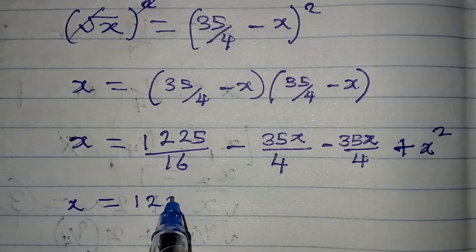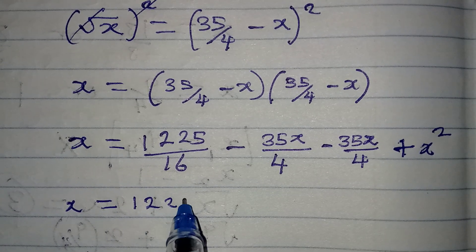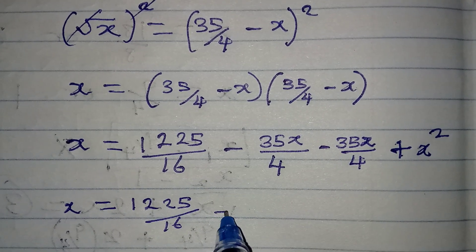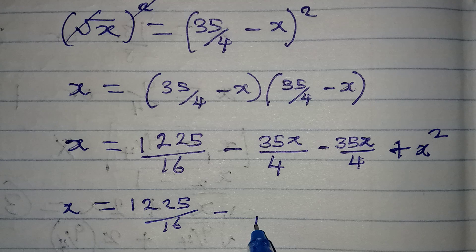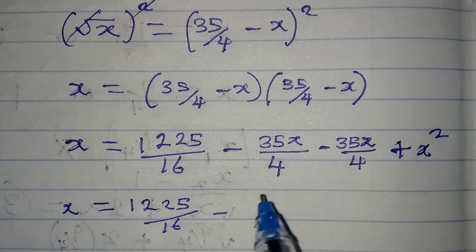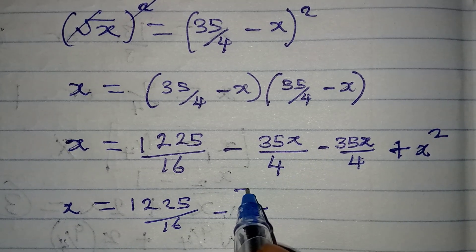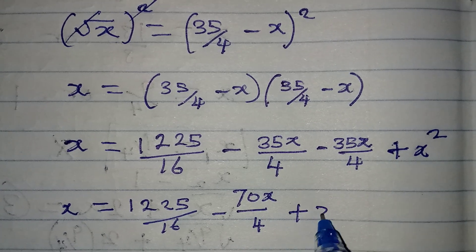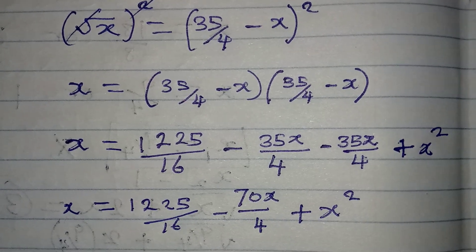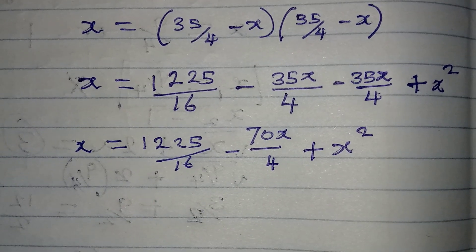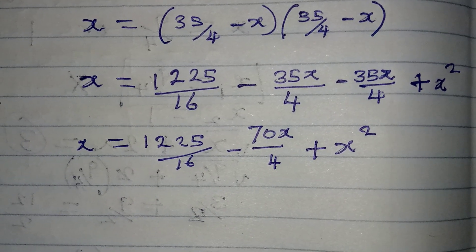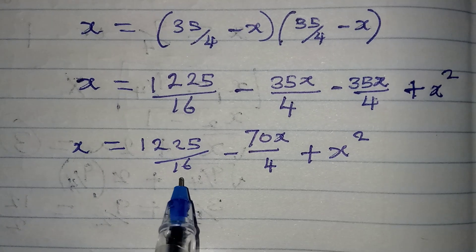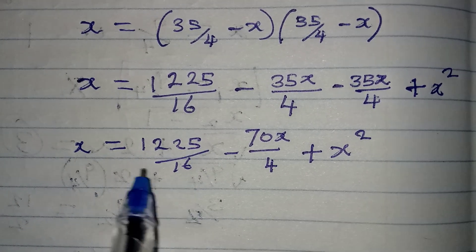Continuing, x equals 1225 over 16. The LCM for the middle terms is 4, so the two terms combine to give minus 70x over 4, plus x squared. This is now a quadratic equation.